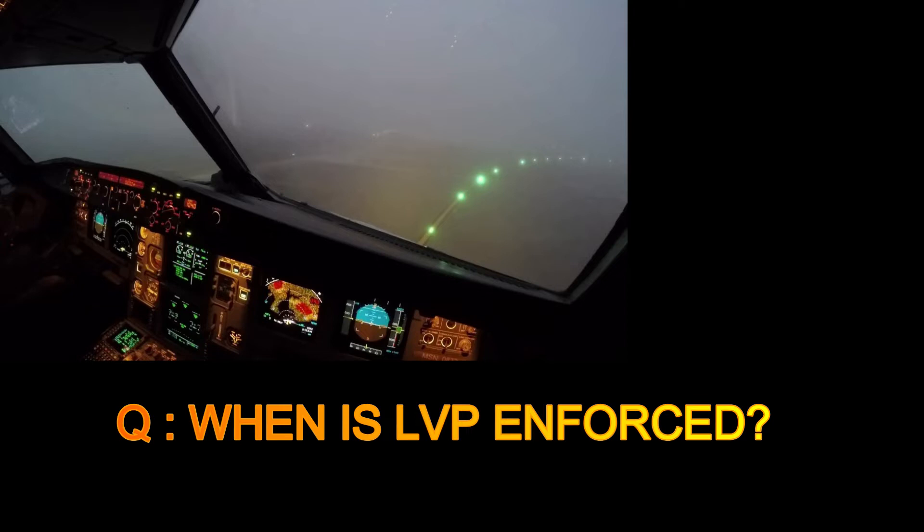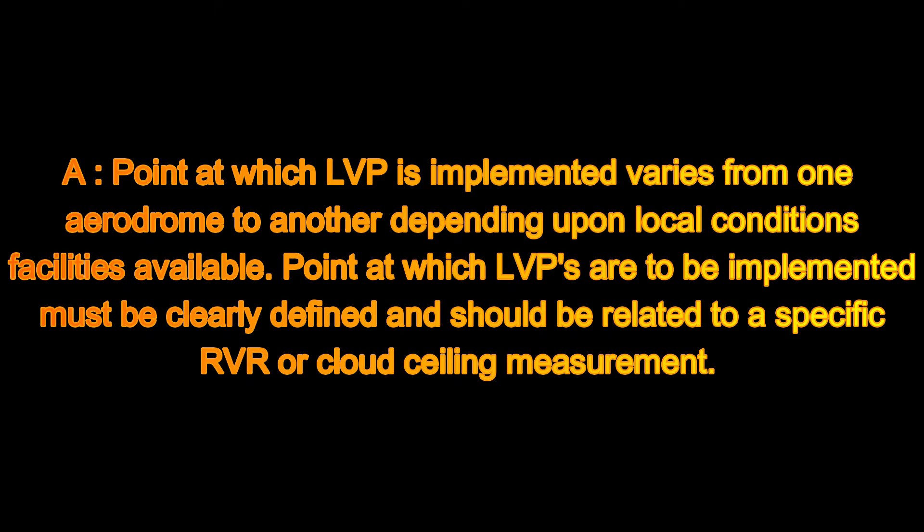The basic question which you may be asked is: when is Low Visibility Procedure, or LVP, enforced? The point at which LVP is implemented varies from one aerodrome to another depending on local conditions and facilities available. The point at which LVPs are to be implemented must be clearly defined and should be related to a specific RVR or cloud ceiling measurement.